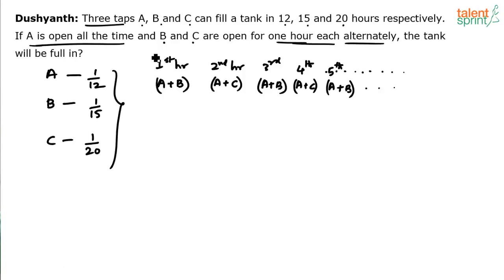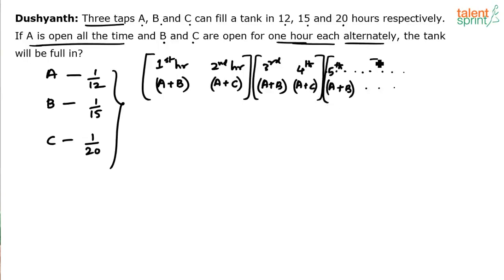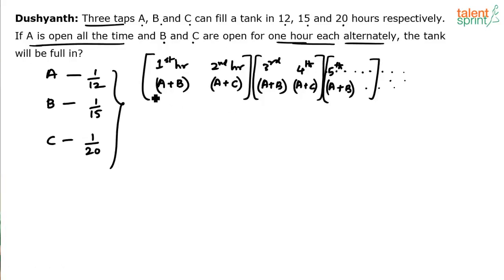The cycle here is two hours. The amount of work done every two hours will be the same — first and second hour equals third and fourth hour, and so on. The pattern is A+B, A+C, A+B, A+C repeatedly. So consider the unit as two hours: how much work gets done in two hours.